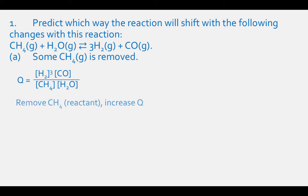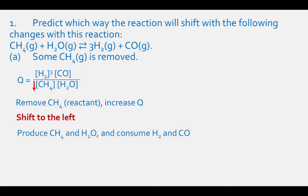For part A, if we remove some CH4 gas, which is a reactant, you will raise the value of Q because we are decreasing the denominator. Therefore, the reaction will respond by producing reactants CH4 and H2O and consuming products H2 and CO — the reaction shifts to the left.